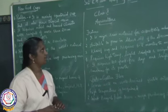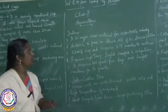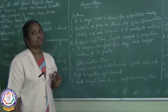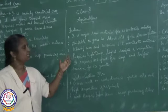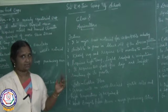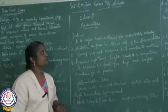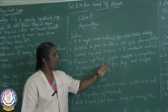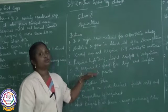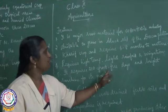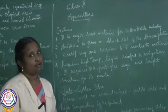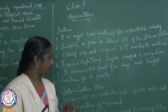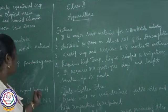Cotton is a raw material suitable to grow in the black soil of the Deccan Plateau. It is a kharif crop — sown at the onset of monsoon and harvested from September to October, requiring six to eight months to mature. It requires high temperature, light rainfall, and irrigation. It also requires 210 frost-free days and bright sunshine for its growth.